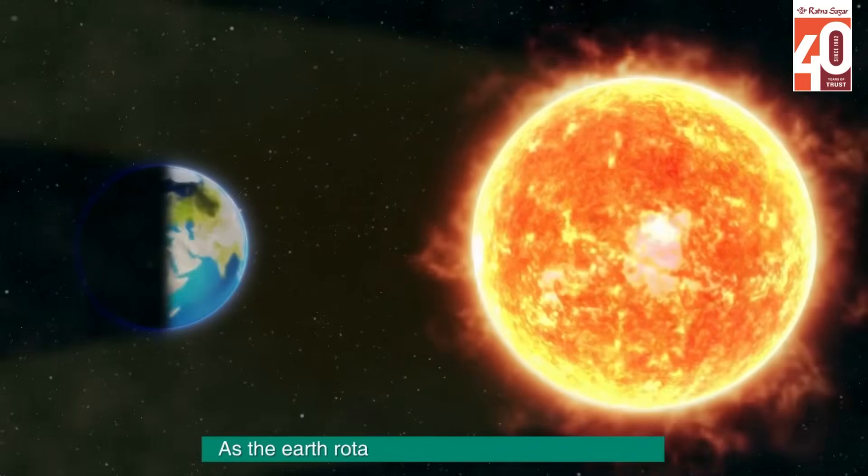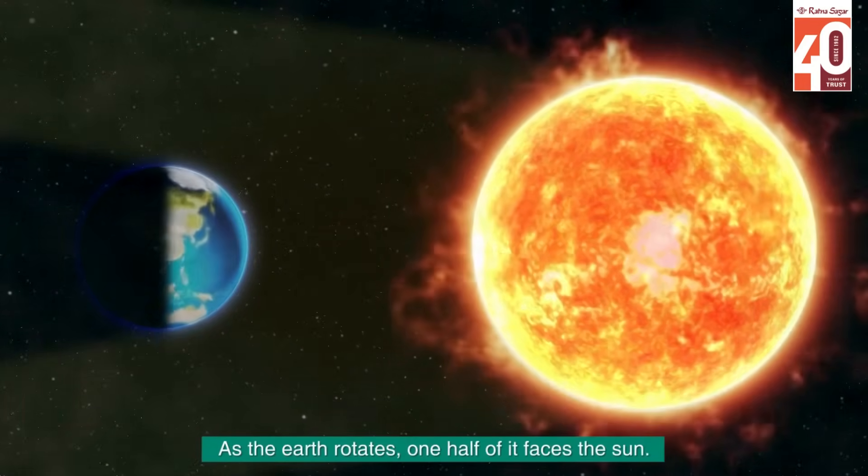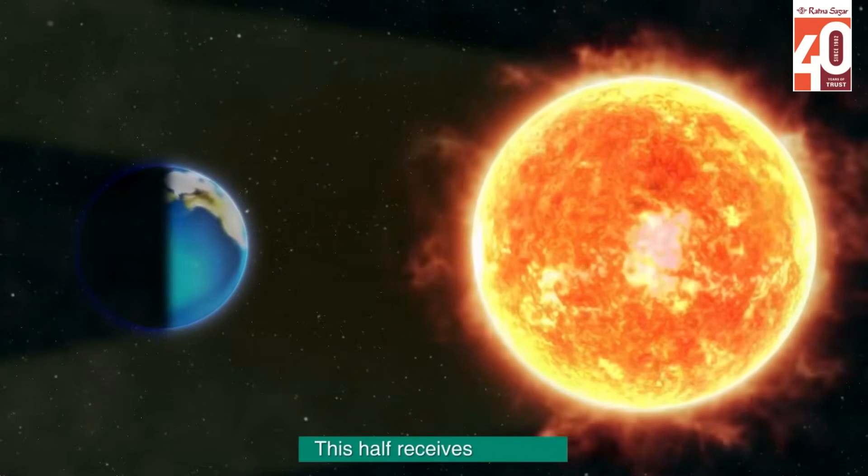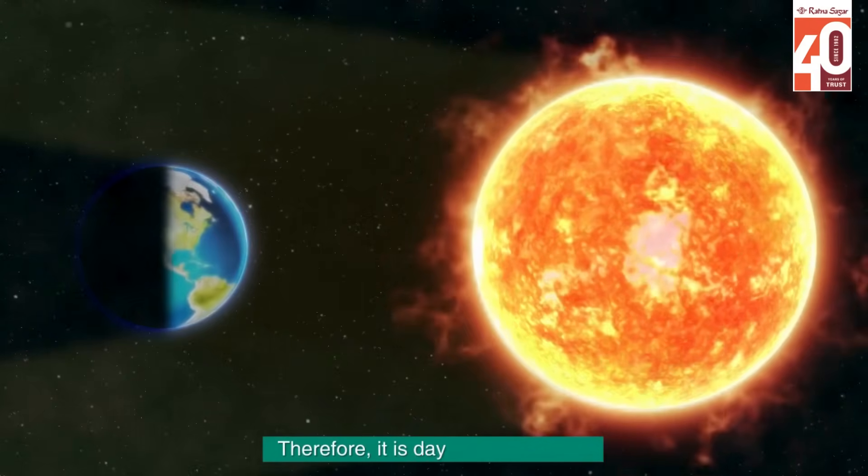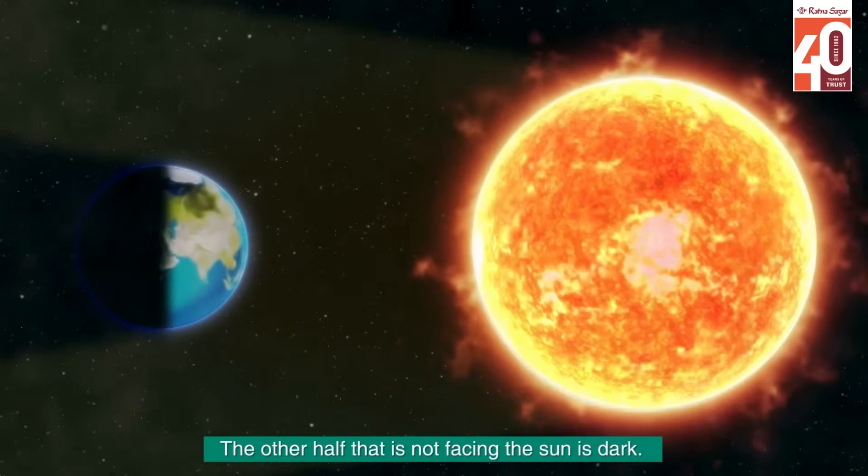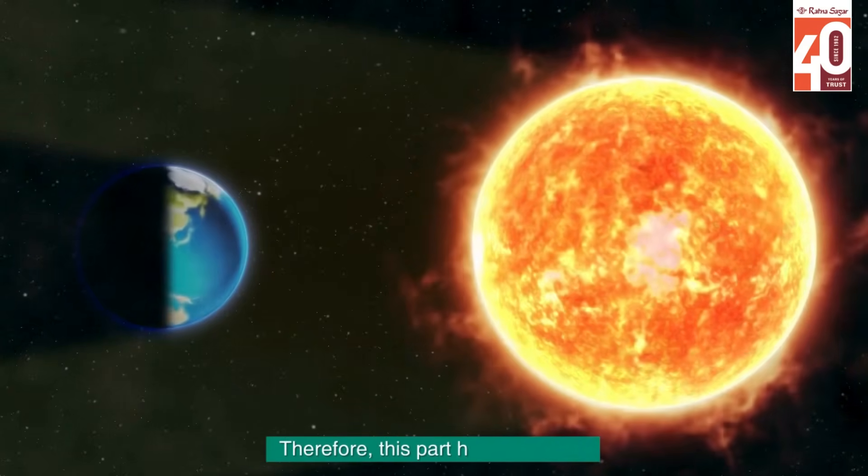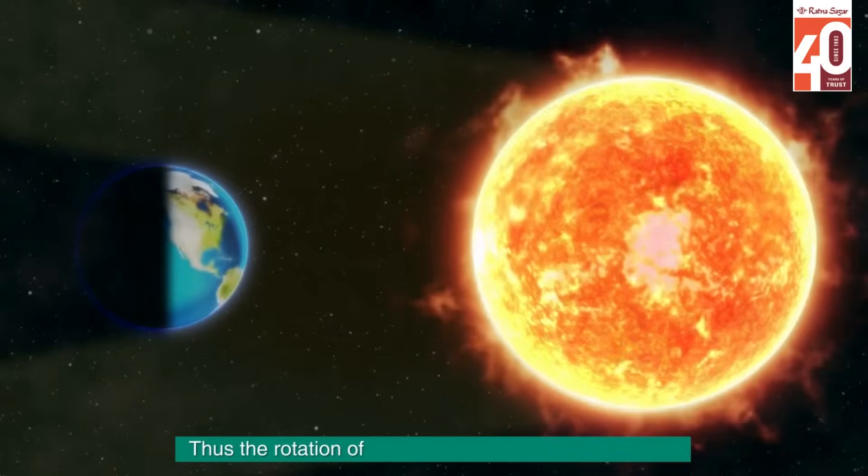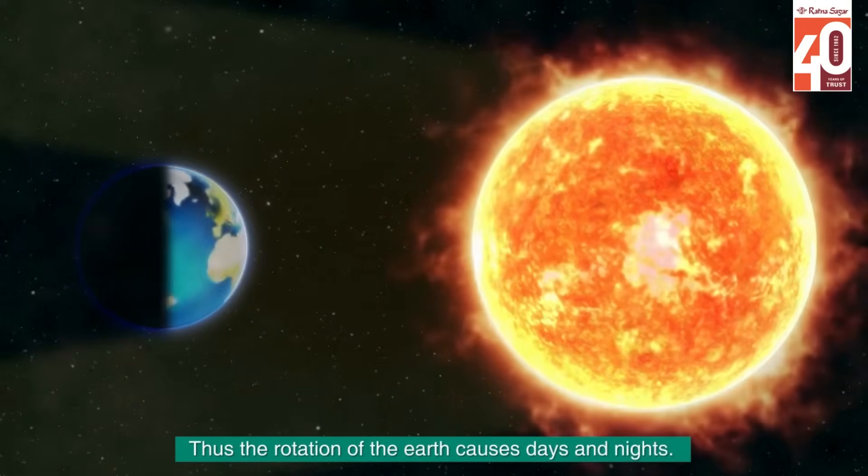As the Earth rotates, one half of it faces the Sun. This half receives sunlight. Therefore, it is daytime on this part. The other half that is not facing the Sun is dark. Therefore, this part has nighttime. Thus, the rotation of Earth causes days and nights.